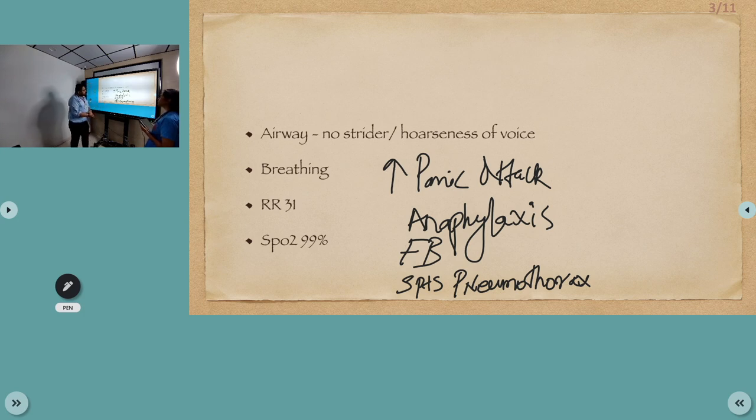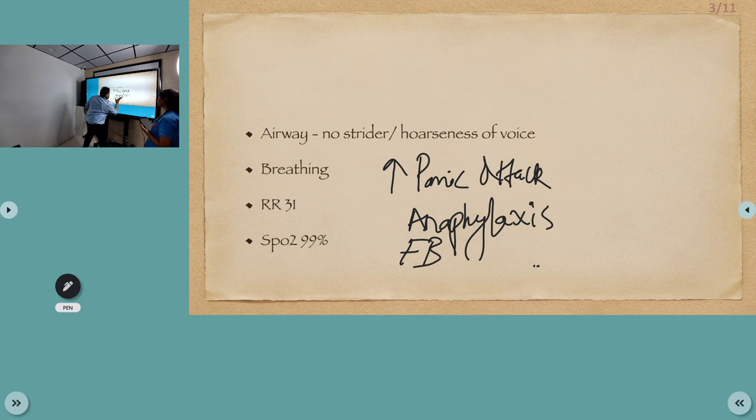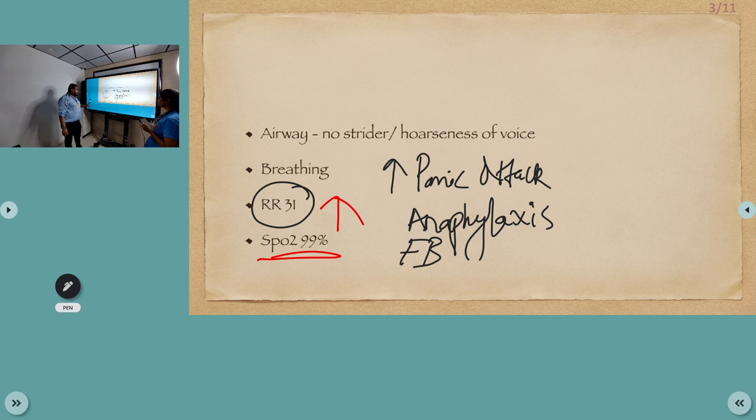Coming to the breathing: air entry was bilaterally equal, so your pneumothorax is out. Bilaterally equal air entry, and foreign body causing obstruction can sometimes still have okay air entry. Coming to the respiratory rate, it was 31 per cycle, so it is increased. Saturation is maintained at 99%, so at present there is no compromise to the airway.